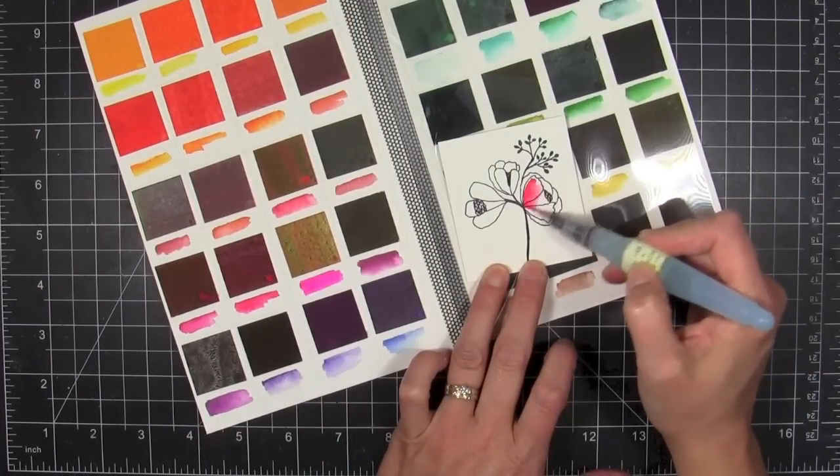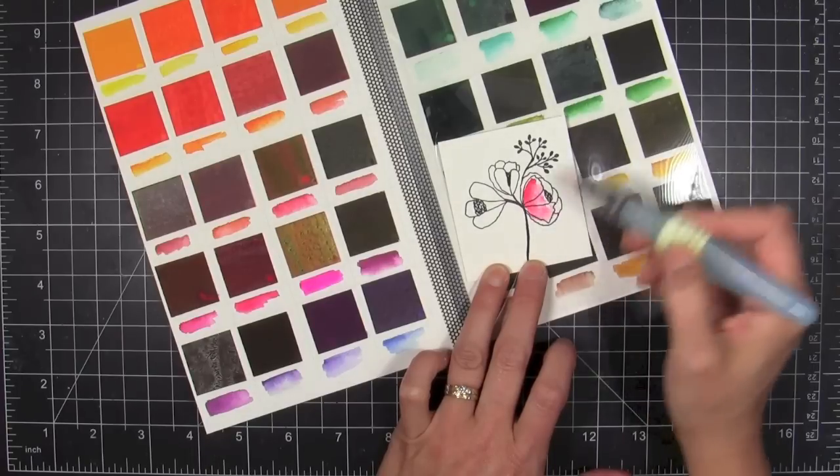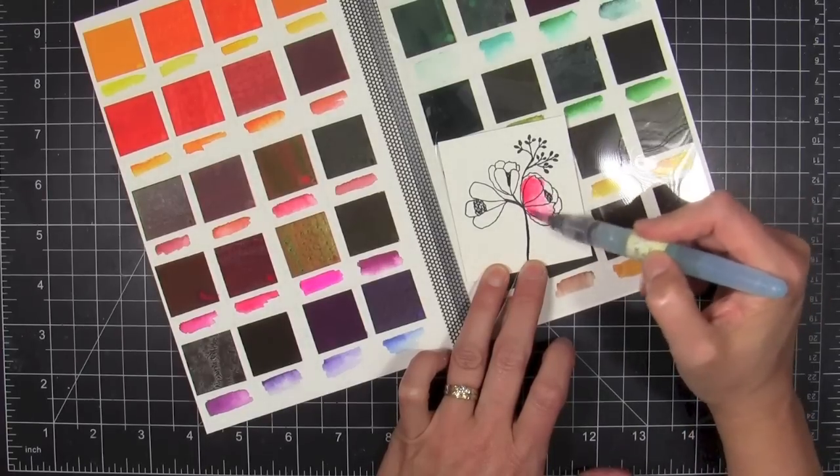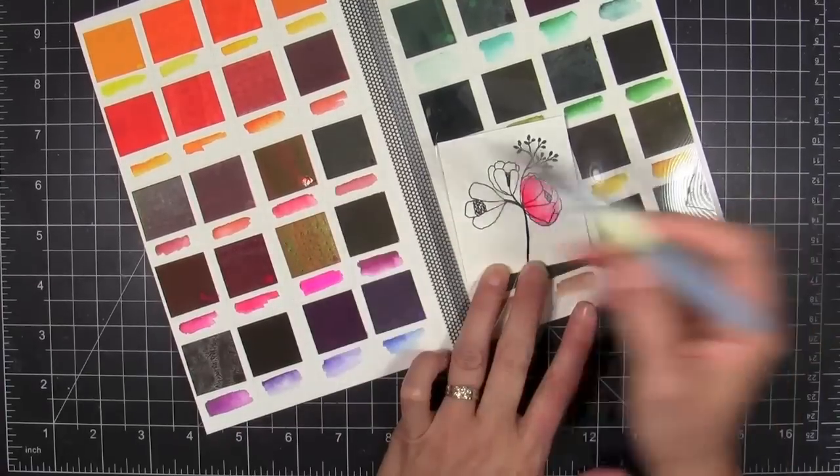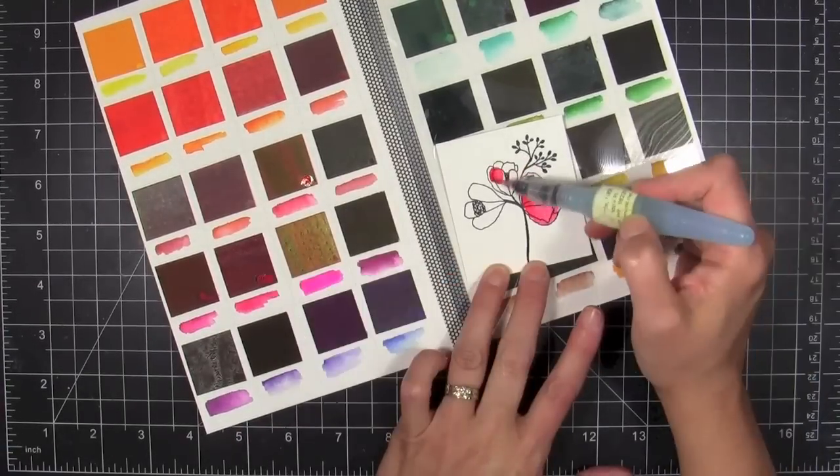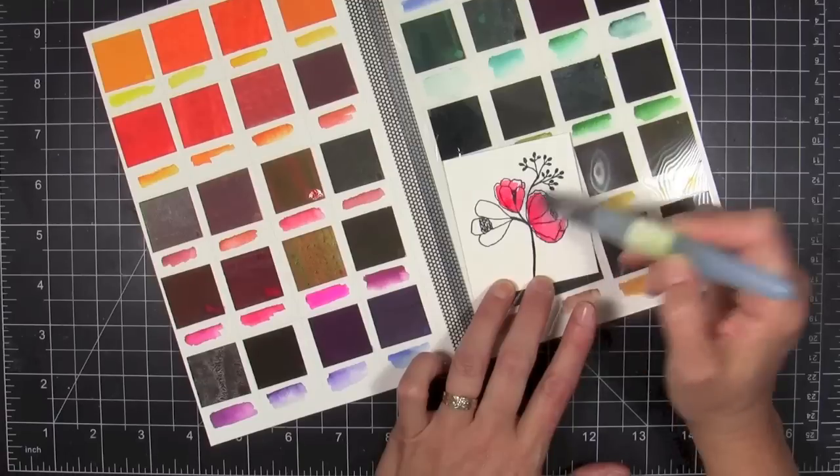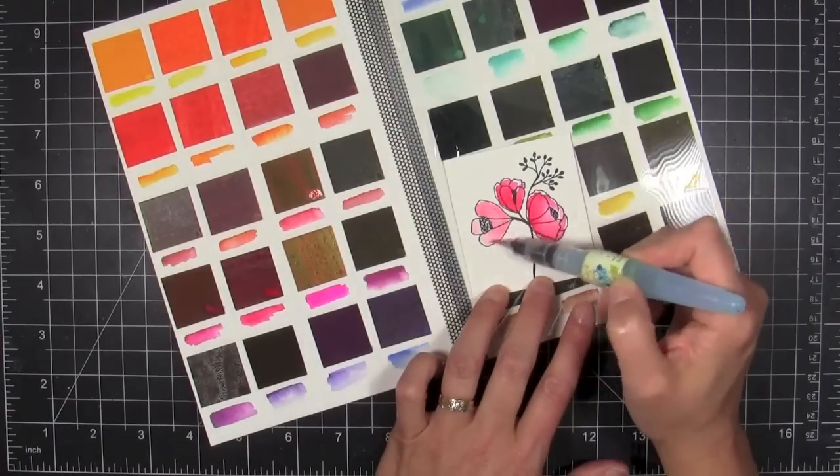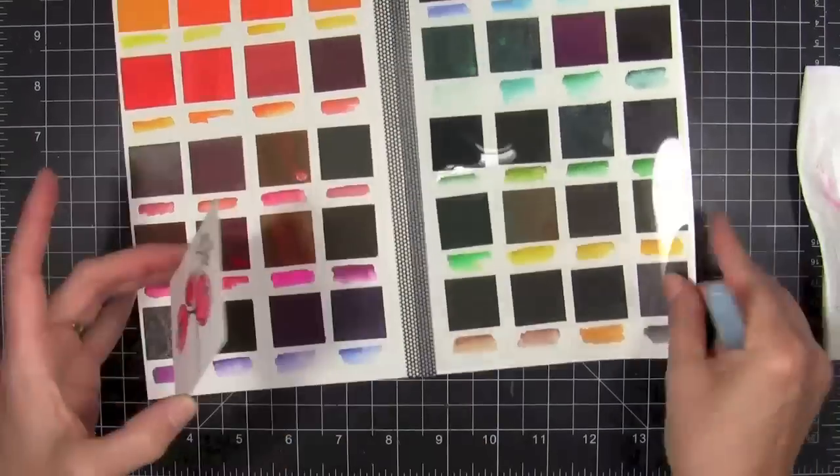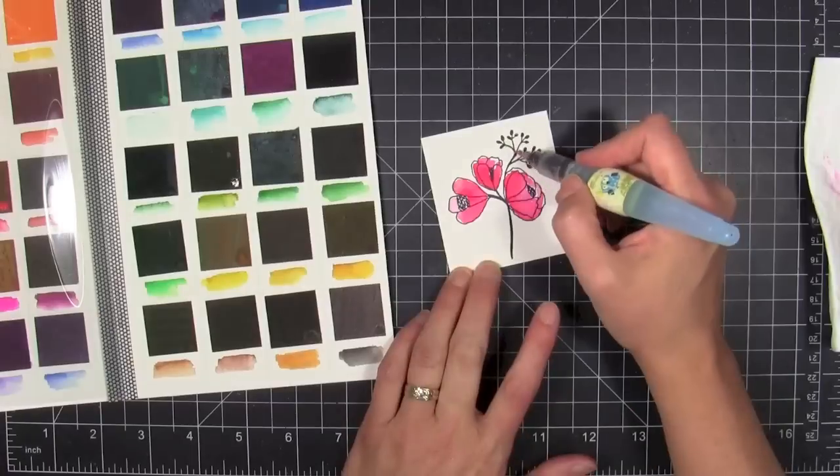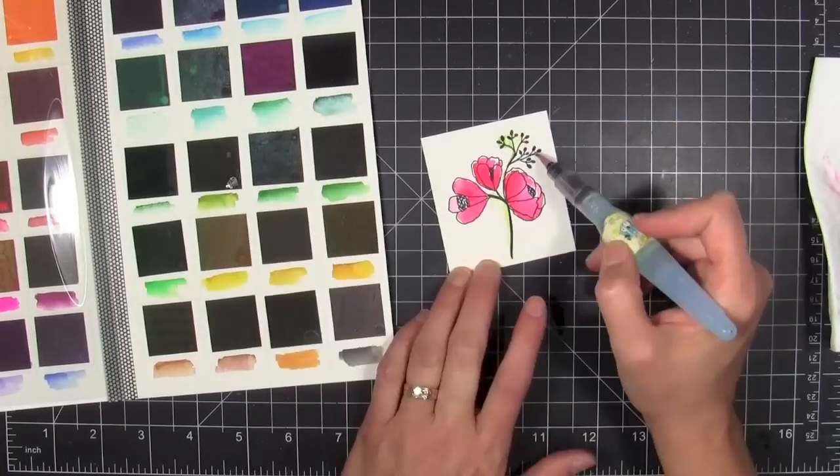So I took a little piece of watercolor paper and stamped a flower on there. This is by Savvy Stamps, one of their new flowers from their recent release, it's the posies. I just stamped it with StazOn because I needed a bleed-proof ink. These colors just instantly activate the minute the water touches them, so you do want to make sure that your hands are dry when you're handling the sheets themselves.